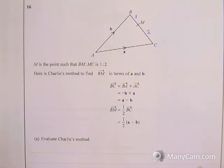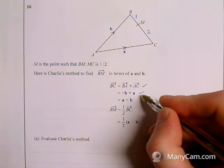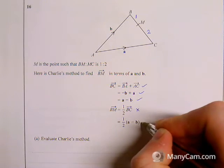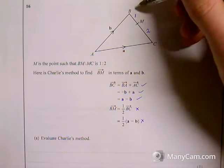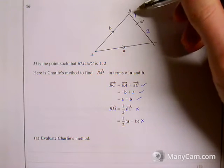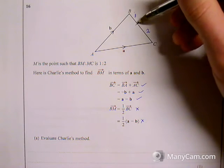Evaluating Charlie's method, going through, he's perfect all the way through up until he gets to that point. Because here, the distance from B to M isn't half of the distance from B to C. It's in the ratio 1 to 2.